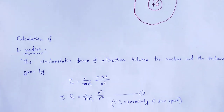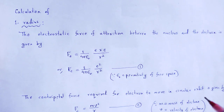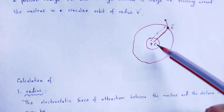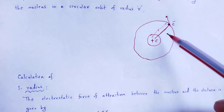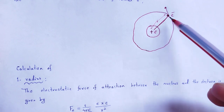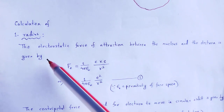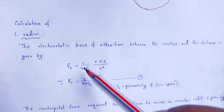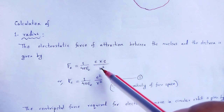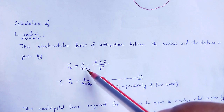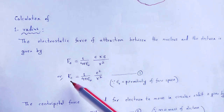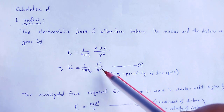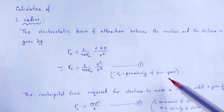Calculation of radius. Here, two forces are present. One is the electrostatic force of attraction between the nucleus and the electron. The electrostatic force of attraction between the nucleus and the electron is given by F_E = (1/4πε₀) × e² / R², where ε₀ is the permittivity of free space.